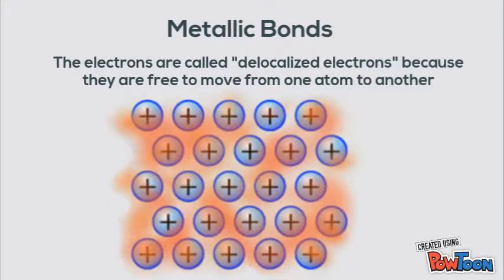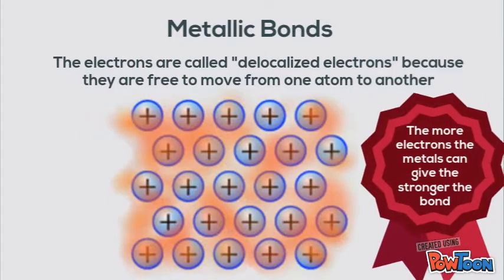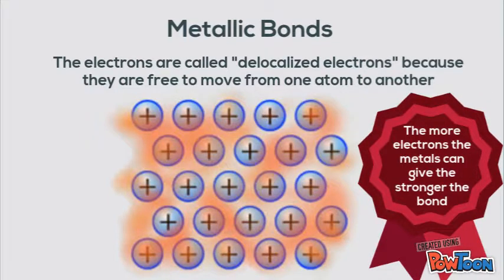The electrons are called delocalized electrons because they are free to move from one atom to the other. These are all valence electrons. The more electrons that the metal can give, the stronger the bonds, so the ones with the most valence electrons are going to have the strongest metallic bonds.